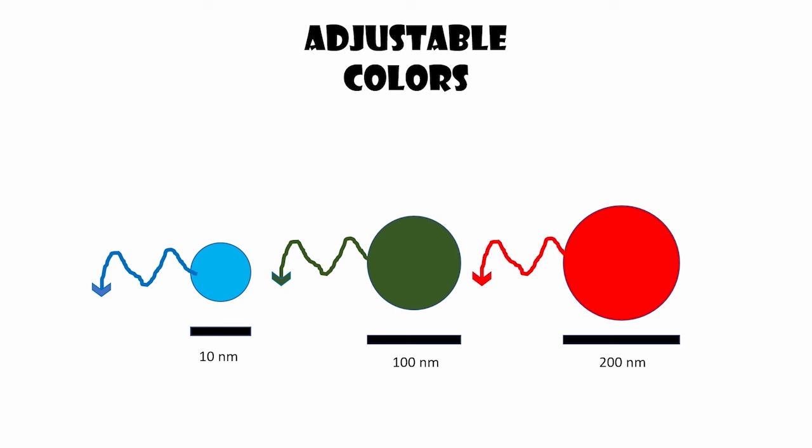Smaller dots have a higher energy level resulting in the emission of shorter wavelength light often in the blue region while the larger dots emits longer wavelength light such as red. This tunability is a key feature allowing scientists to precisely control the emitted color.